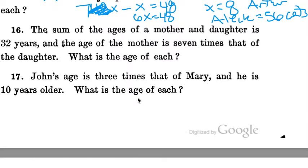Number 16: The sum of the ages of a mother and daughter is 32 years, and the age of the mother is 7 times that of the daughter. What is the age of each? The sum of the age of the mother and daughter is 32. We know the least amount of information about the daughter, we'll make her x. And we know that mother is 7x. The sum, again, that's our key word that we know is addition. So mother 7x, plus the daughter is x, both of them together is 32.